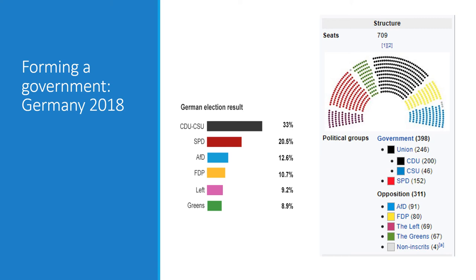The CDU had a plurality but not a majority in the Bundestag after 2018 — Germany rarely has one party with a majority. So they had to create a coalition, and they decided to join forces with the second largest party, the Social Democratic Party, the SPD. In Germany that is called a grand coalition of the two biggest parties — basically similar to if Democrats and Republicans in the US cooperated and shared power.